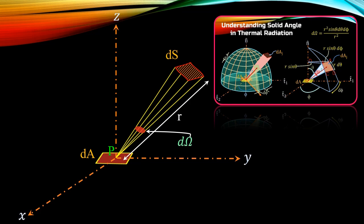In that video, I directly started with the expression of d omega as dS by R square. Today I will show how this expression comes.